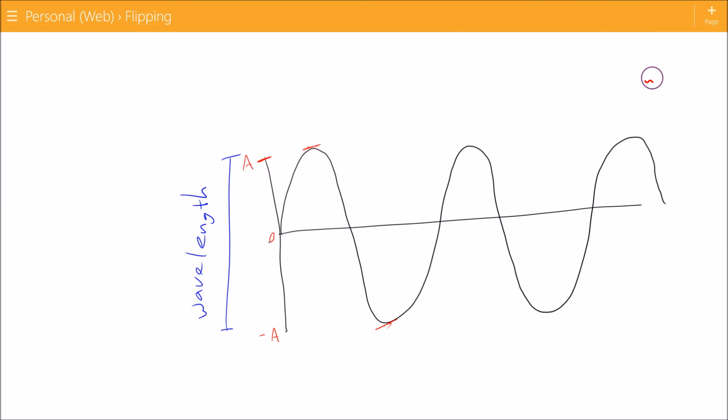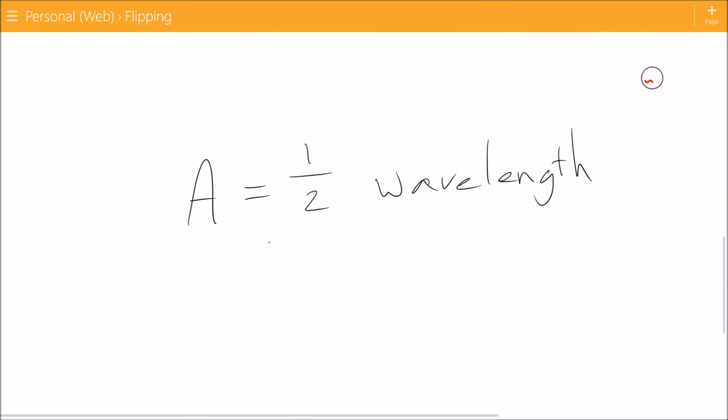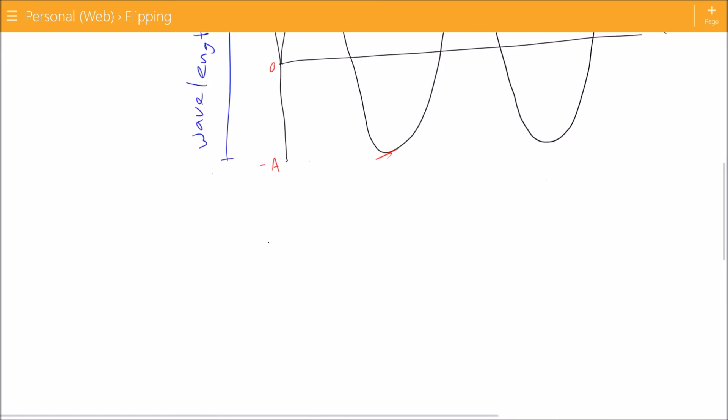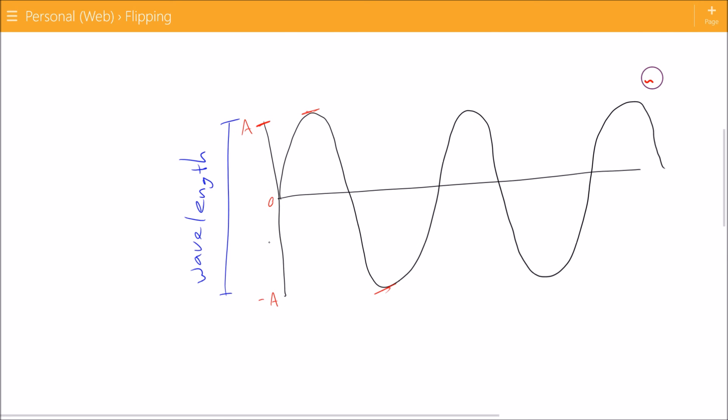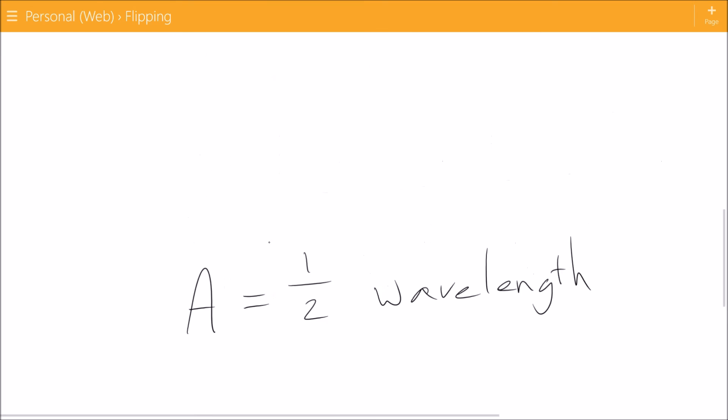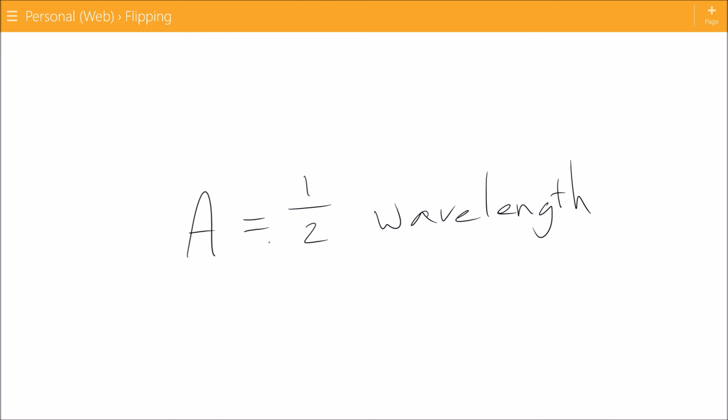So wavelength is going to be double your amplitude. Your amplitude is going to be one half of the wavelength because that only goes up halfway right there. Given that, knowing this, you should be able to come up with your wavelength fairly accurately, and that's it.